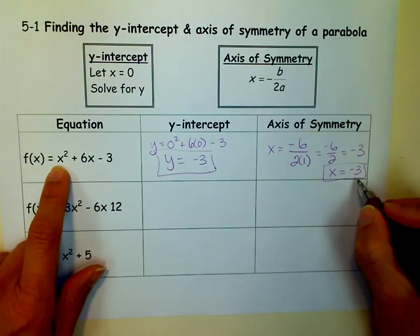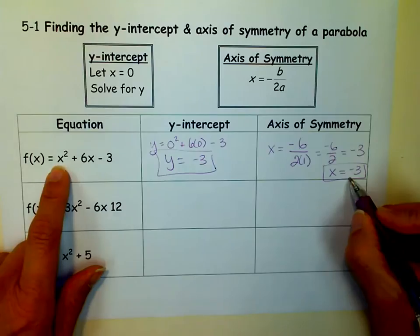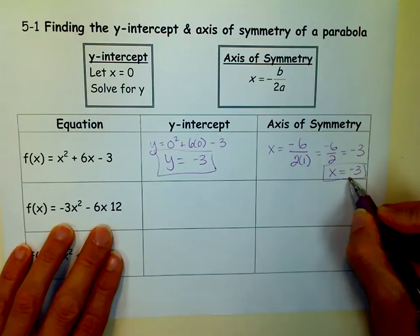Keep in mind, the axis of symmetry is a line. It's not a point, so we have to have that equation, x equals negative 3. It's a vertical line at negative 3. Okay, next one.